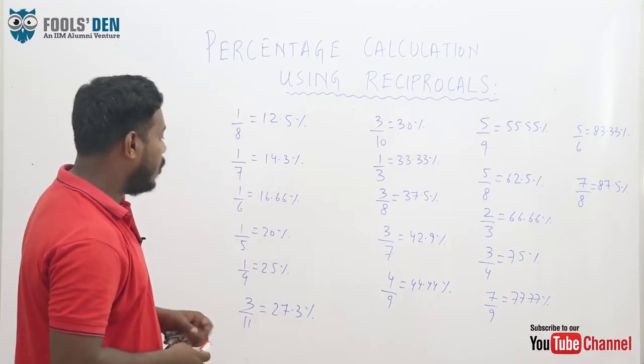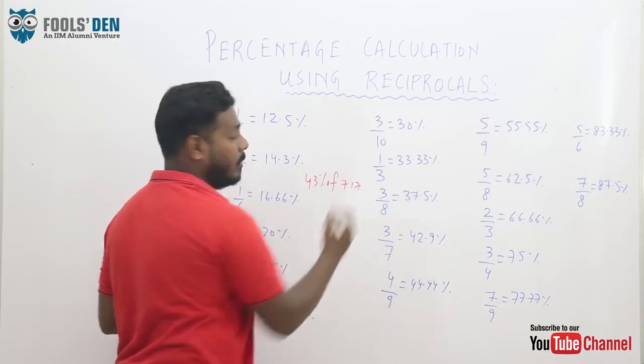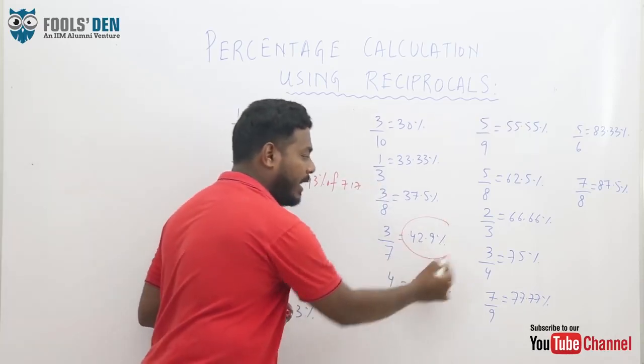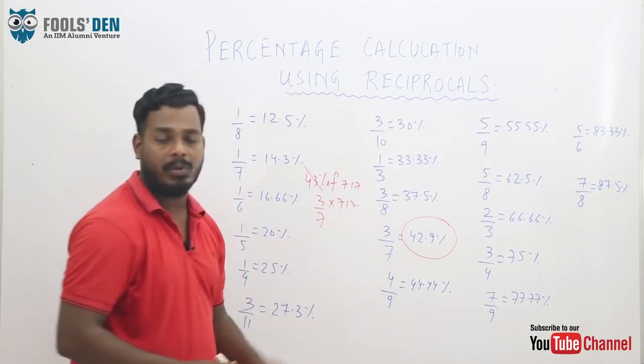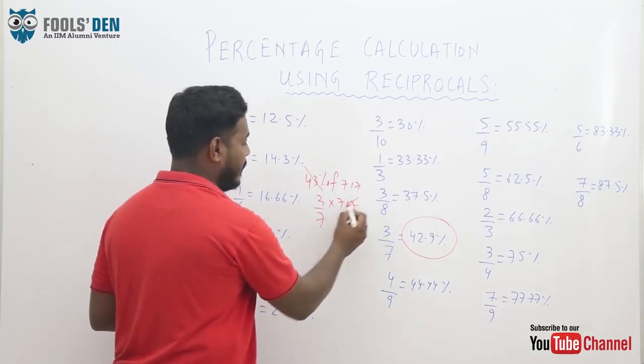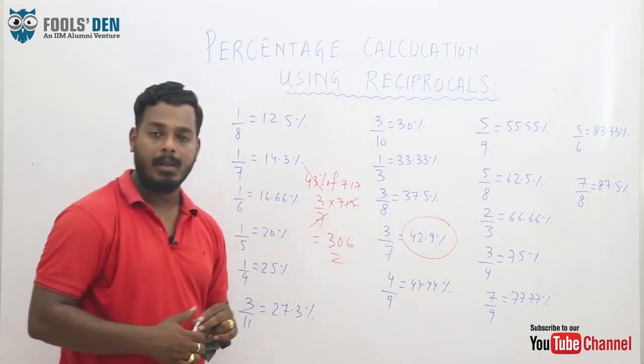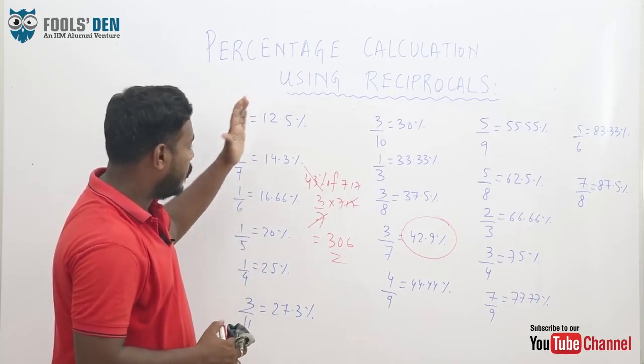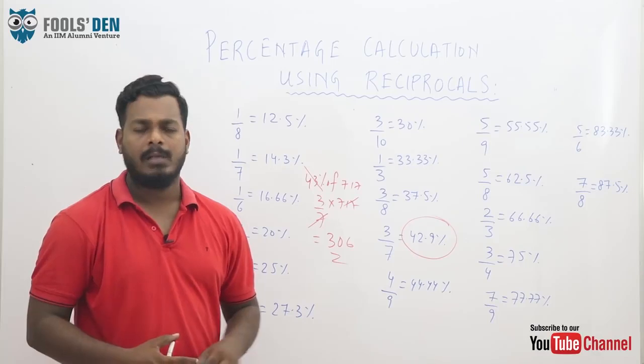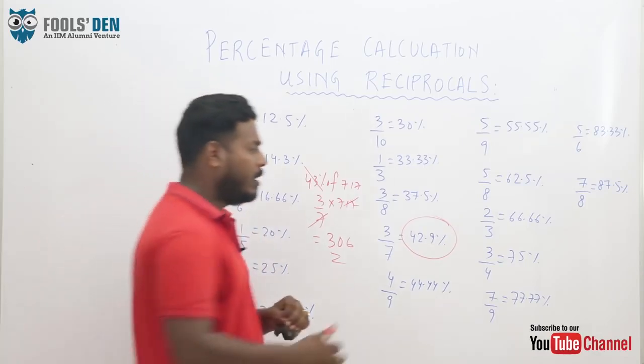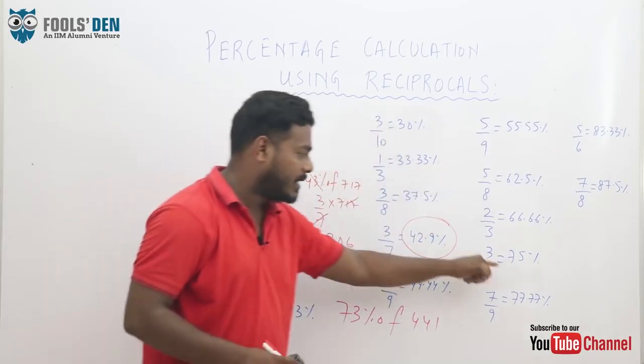Suppose, if you need to calculate 43 percent of some number 717, and you remember that 42.9 percent is 3 by 7. Can we approximate this to 3 by 7 of 717? Now that makes the calculation really easy. 717 by 7 would be approximately 102. 102 into 3 is 306 approximately.